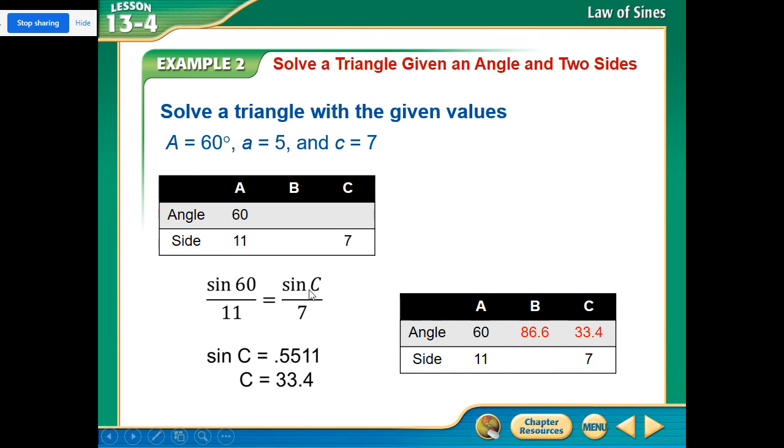When we don't know the angle like this, we need to do our second sine, our inverse sine. So we still do our cross multiplying, 7 and sine 60 divided by 11, and that gives us 0.5511. Now we go into our calculator and hit second sine of that value. Well, the second sine of that is 33.4.